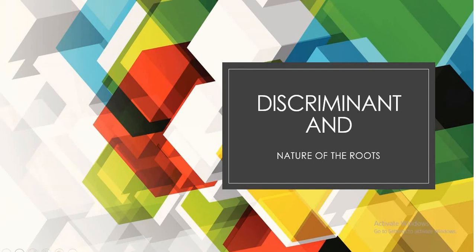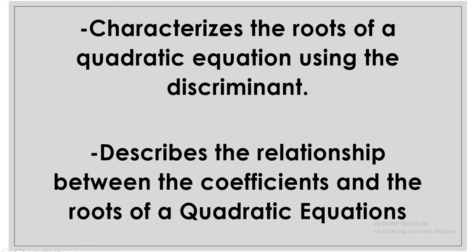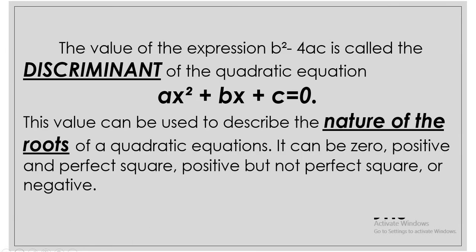Discriminant and nature of the roots. At the end of the session, the students can now characterize the roots of a quadratic equation using the discriminant, and describe the relationship between the coefficients and the roots of a quadratic equation. The value of the expression b squared minus 4ac is called the discriminant of the quadratic equation ax squared plus bx plus c is equal to 0. This value can be used to describe the nature of the roots of a quadratic equation.